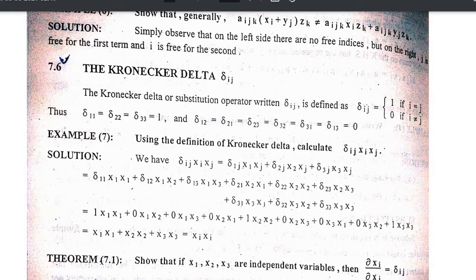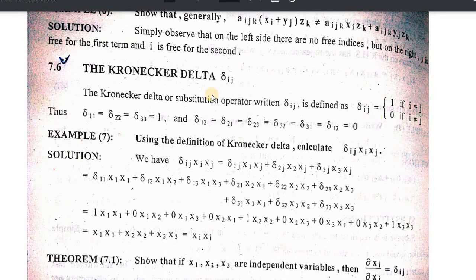Delta ij equals zero if i is not equal to j. So delta 1-1, delta 2-2, delta 3-3 are equal to one, because i equals j according to this definition. And delta 1-2, delta 2-1, delta 2-3, delta 3-2, delta 3-1, delta 1-3 are all equal to zero, because i is not equal to j. This is the expression of Kronecker delta.